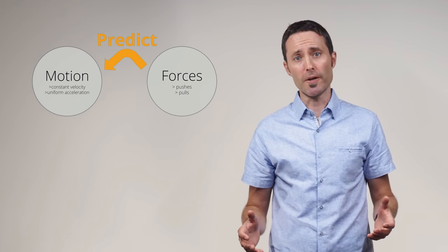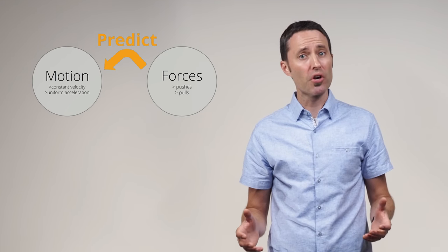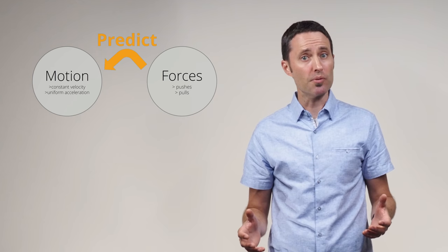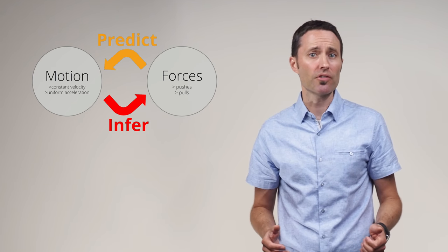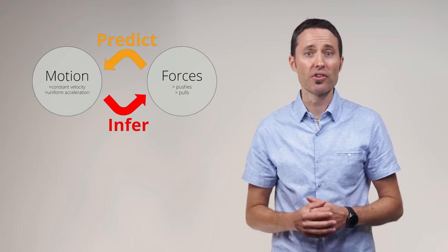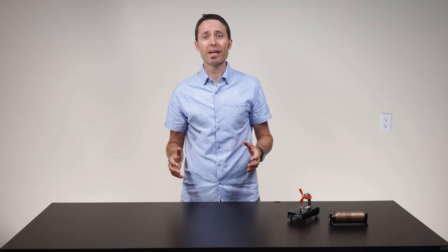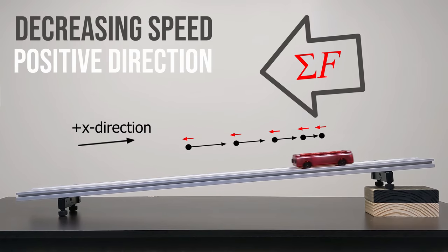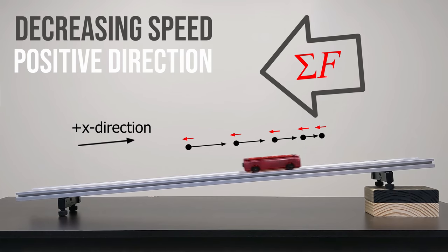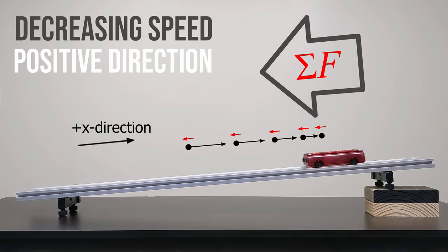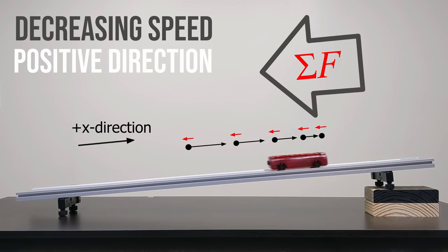This can also go the other way. The observed motion of an object can be used to make an inference about the forces experienced by the object. For example, if an object is moving in a straight line and decreasing speed, it can be inferred that the sum of all the forces exerted on the object must be pointing in the opposite direction of its motion.